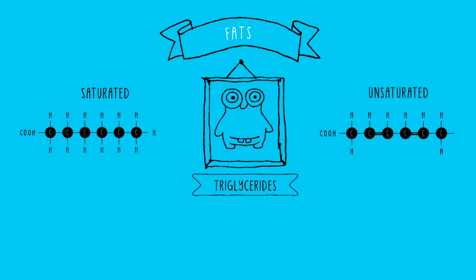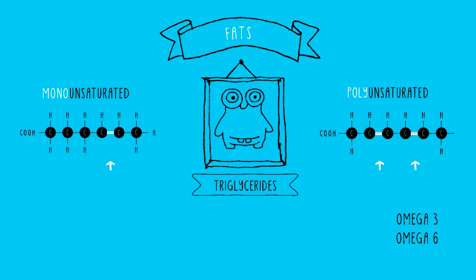Unsaturated fats are broken down into monounsaturated and polyunsaturated categories. Mono means one double bond — one unsaturated carbon atom — and poly means more than one carbon has a double bond. Omega-3 and omega-6 fatty acids are examples of polyunsaturated fatty acids, found in foods like nuts, seeds, and seafood. Foods like olives and avocados contain a lot more monounsaturated fatty acids.